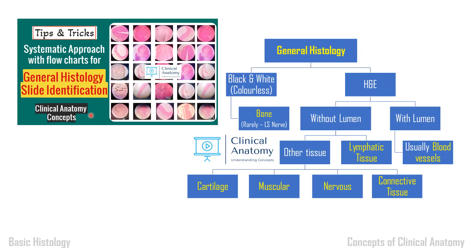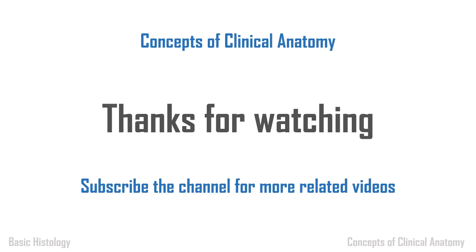In the next video — the systematic approach with a flow chart for general histology — you can finish bone, cartilage, blood vessels, lymphatic system, and connective tissue. Thank you for watching. Subscribe to our channel for more related videos.